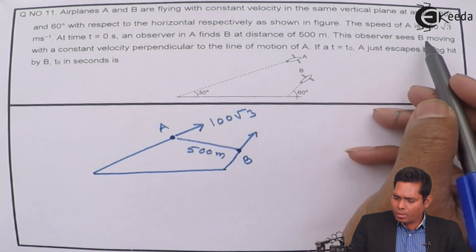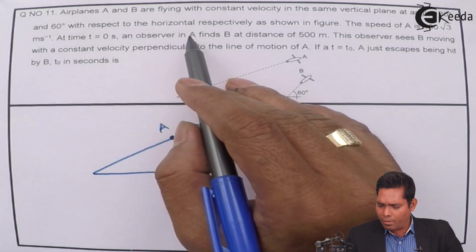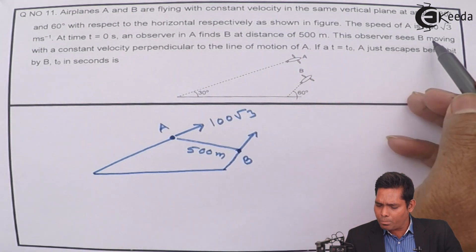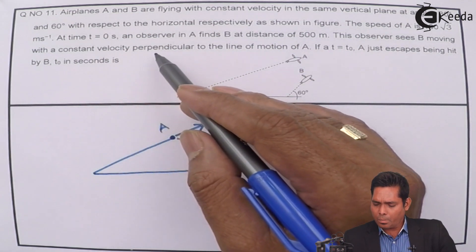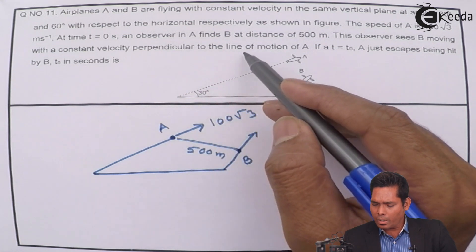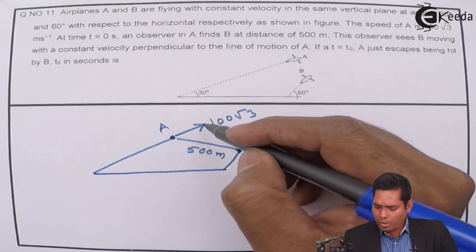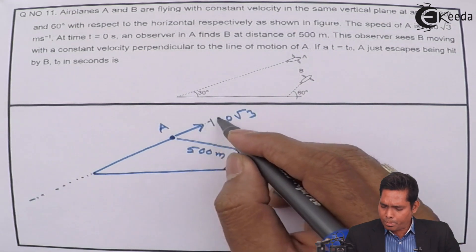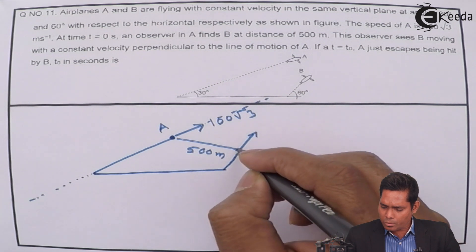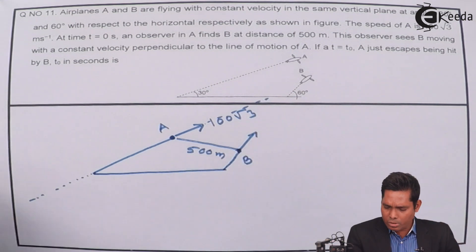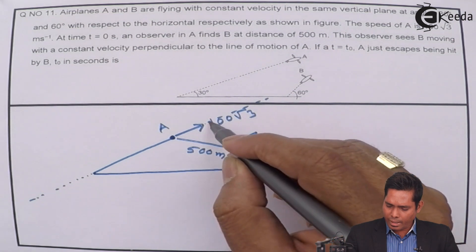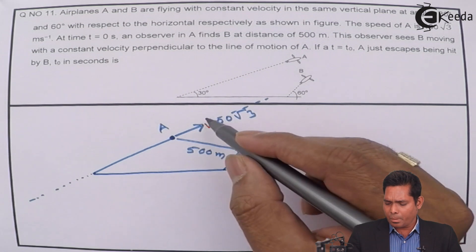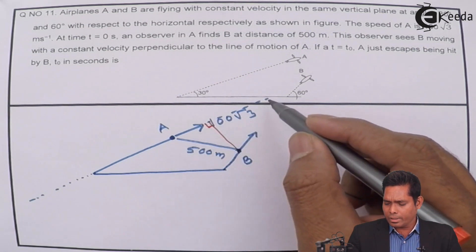Observer A finds B at a distance of 500 meters, and from A, B is seen moving with a constant velocity perpendicular to the line of motion of A. So B is moving perpendicular to A's line of motion as seen from A.